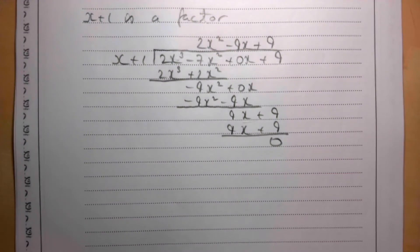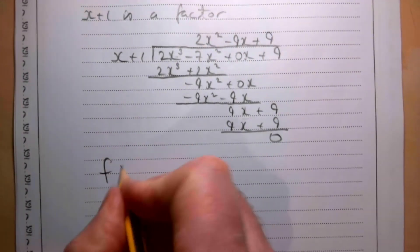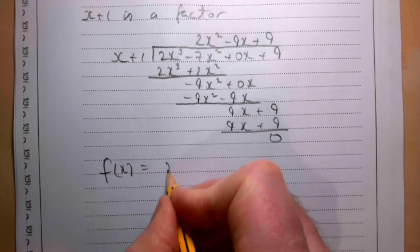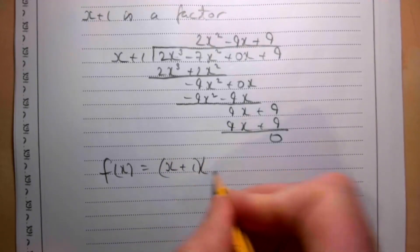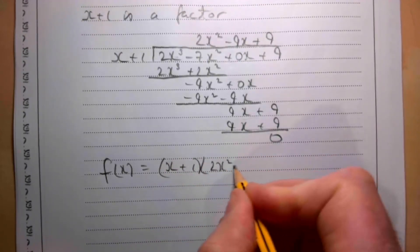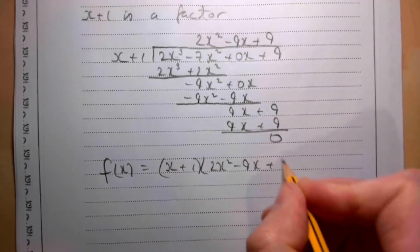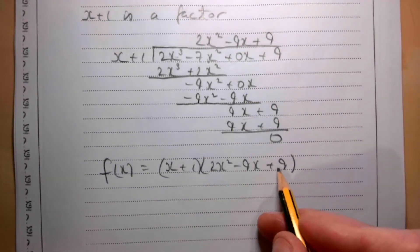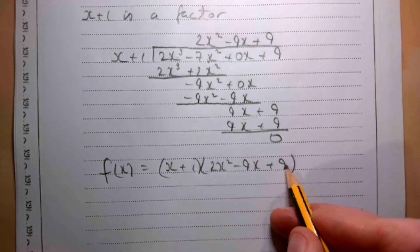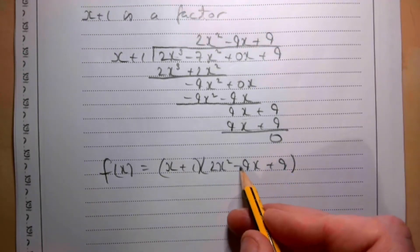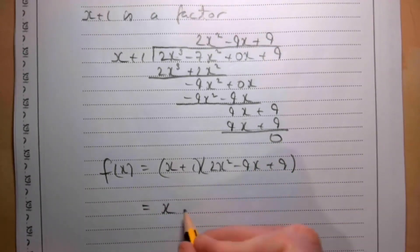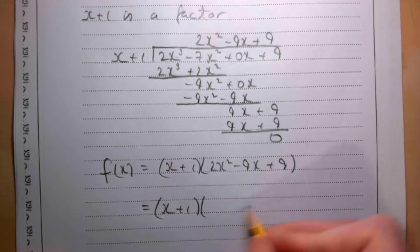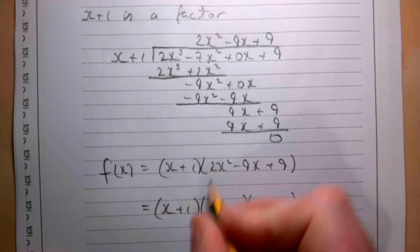So that means f(x) equals (x + 1)(2x² - 9x + 9). Now people have different ways of factorizing this bit. Some people like to do 2 times 9 to give you 18 and split your middle term. Totally fine, whatever way you want to do it.